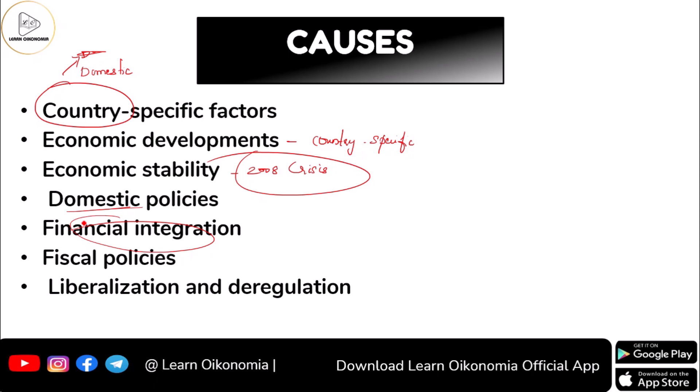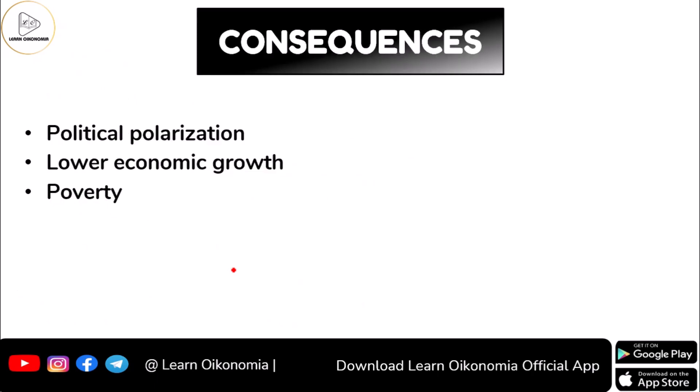Fiscal policies taken by the government can also influence the inequality situation. For example, programs that target a particular section of people — whenever the government gives financial assistance to a particular section, it is not considering other sections, which is a deliberate kind of inequality. While such targeting systems may be intended to reduce inequality, they might actually lead to more inequality. Programs like liberalization and deregulation also contribute to inequality.